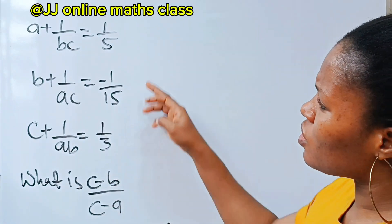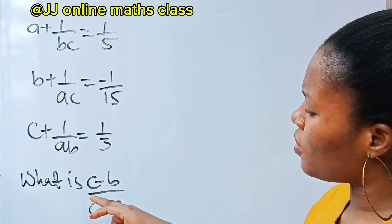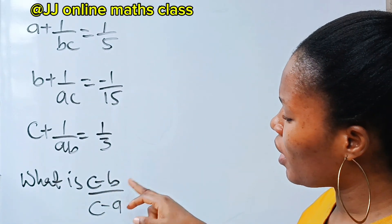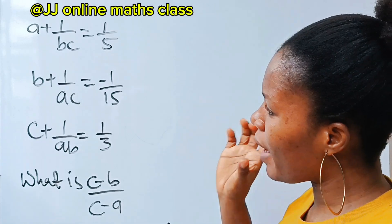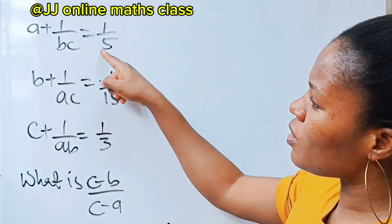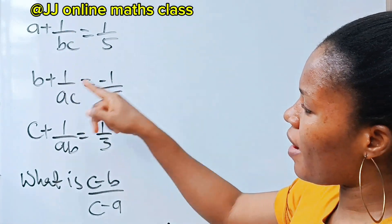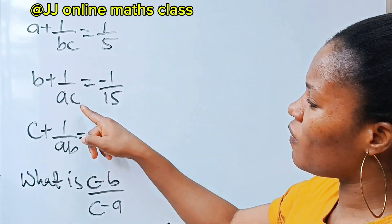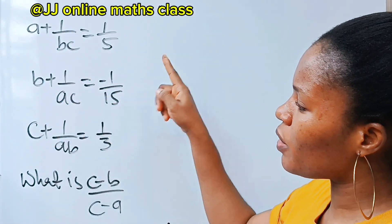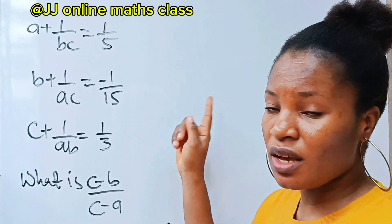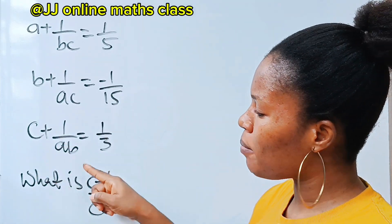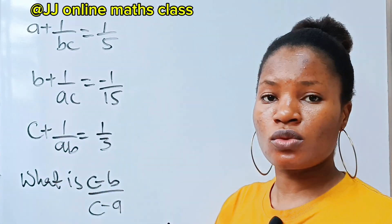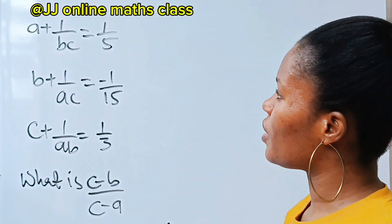We are asked to solve for the value of c minus b over c minus a, if a plus 1 over bc is equal to 1 over 5, and b plus 1 over ac is equal to minus 1 over 15, and c plus 1 over ab equals 1 over 3.